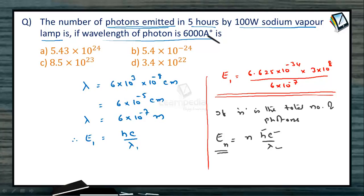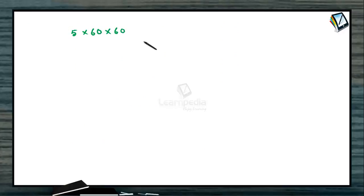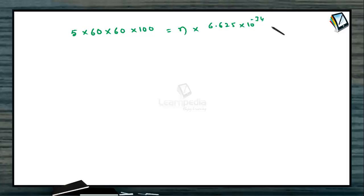The total energy is given by the 100W sodium vapour lamp operating for 5 hours. So substituting and solving for N: E_N = 5 × 60 × 60 seconds × 100W = N × hc/λ, where h = 6.625 × 10⁻³⁴, c = 3 × 10⁸, and λ = 6 × 10⁻⁷.